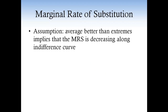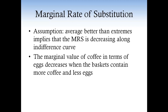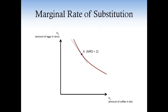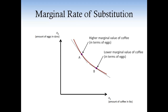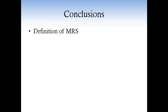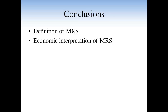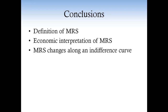This gives a nice interpretation to the assumption that the average is better than the extreme: the marginal value of coffee decreases when the basket contains more coffee and less eggs. If Mary is consuming basket A, her MRS equals two, and so does her marginal value of coffee in terms of eggs. In basket B, coffee is relatively more abundant, and therefore Mary values it less in terms of eggs. In this podcast, we learned the definition of the marginal rate of substitution, its economic interpretation, and how the MRS changes along an indifference curve.